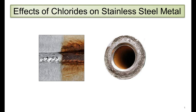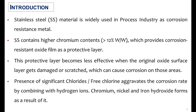Hello everyone, welcome to the channel Learning Engineering Solutions. In this video you will learn about the effects of chlorides on stainless steel. Stainless steel material is widely used in process industry as a corrosion-resistant metal. It contains higher chromium content, greater than 12 percent, which provides a corrosion-resistant oxide film as a protective layer.